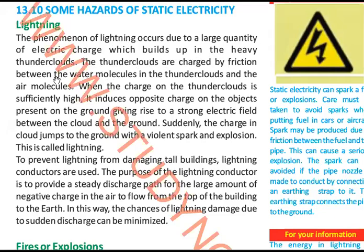The thunderclouds are charged by friction between the water molecules in the thunderclouds and the air molecules. When the charge on the thunderclouds is sufficiently high, it induces opposite charge on the objects present on the ground. It generates the opposite charge due to electrostatic induction, giving rise to a strong electric field between a cloud and the ground.